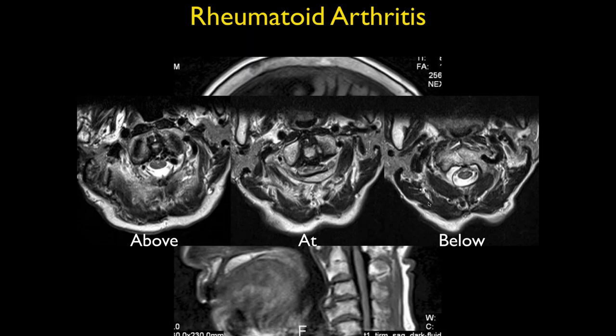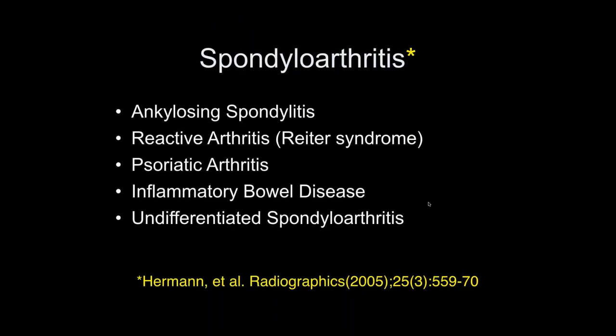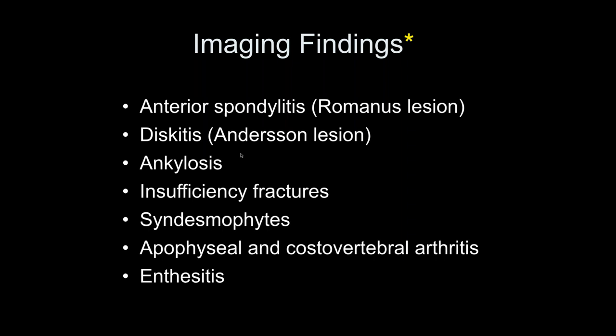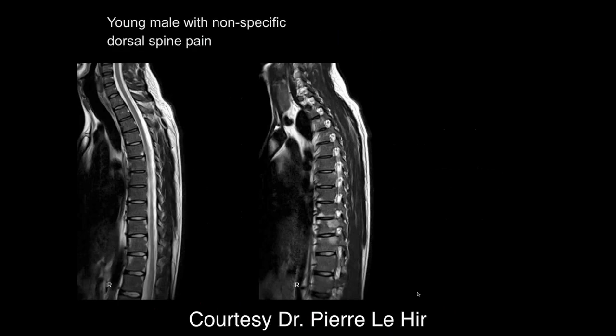If we talk about spinal arthritis — there are a number of different classifications and this is fluid, especially with new serologic studies. We've talked about syndesmophytes in the lumbar spine. Here's a young male with nonspecific dorsal spine pain. There's increased signal at the corners of the vertebral bodies throughout the thoracic and lumbar spine — shiny anterior corners as well as posterior edges. That would be some enthesitis.